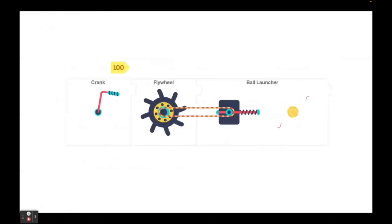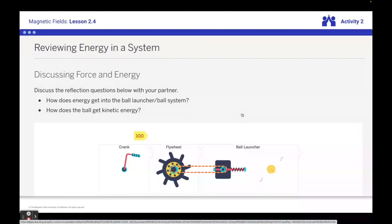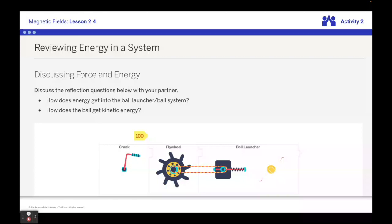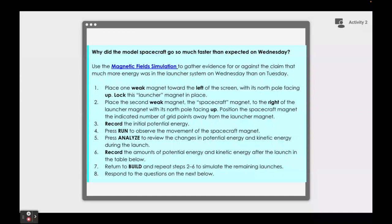When we look at objects in a system, we can define those in several different ways. This was a type of system we would have seen in unit one, where we used a crank to generate kinetic energy in a flywheel, which used that kinetic energy to pull back the spring to store it as potential energy to the point that we want to launch the ball. So keep in mind that when we look at systems — even magnetic systems — we need to define them and identify their different components. What I'm asking you to do on this slide is to go into the sim to gather evidence either for or against the claim that much more energy was in the launcher system on Wednesday than on Tuesday.